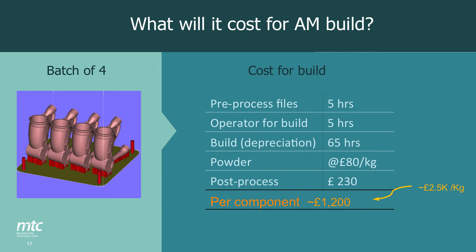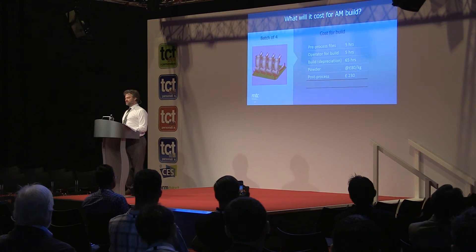A natural question after completing the project is how much it would cost to make. Putting four parts on a bed, they fit on a 250-size AM machine. The cost elements include file preparation, operator time, 65 hours of build time, aluminium powder at around £80 per kilo, and post-processing — getting parts off the substrate, removing supports, and grit blasting — estimated at around £230. The cost for one part comes to approximately £1,200, with a ballpark figure of around £2,500 per kilo for selective laser melting.